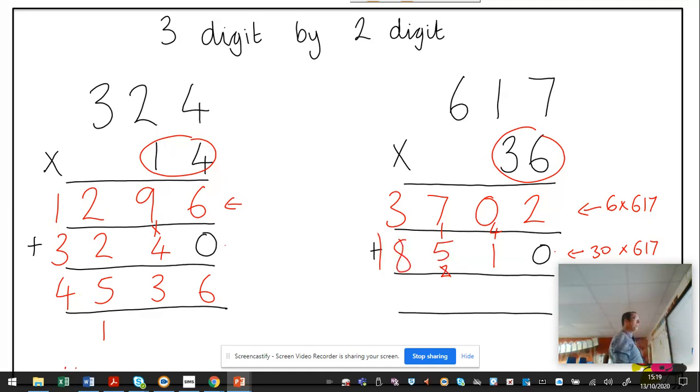So I've got a new column down here when I add them. Two add zero is two. One add zero is one. Five add seven is 12. Eight add three, add one is 12. One add one is two. So we've got there 22,212, which is the answer to 617 times 36.